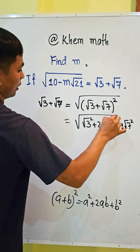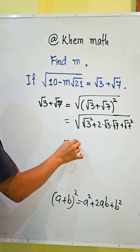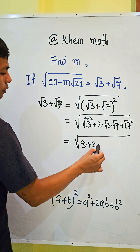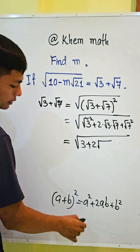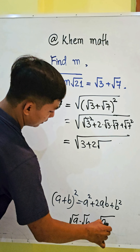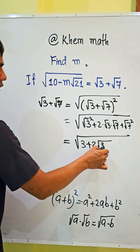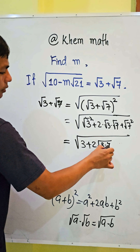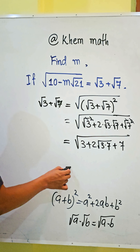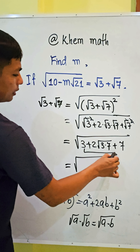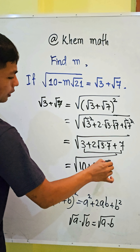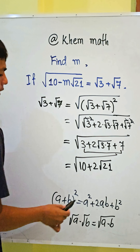Simplifying: square root squared gives us 3, and plus 2 times square root of (3 times 7). Using the formula square root a times square root b equals square root of ab, we get square root of 21. Then, square root 7 squared gives 7. Adding 3 plus 7 gives 10, so the right side becomes 10 plus 2 times square root 21.